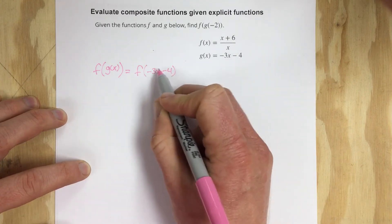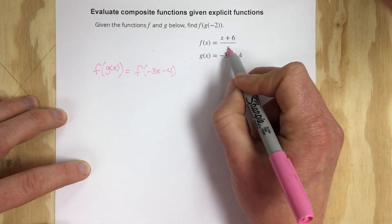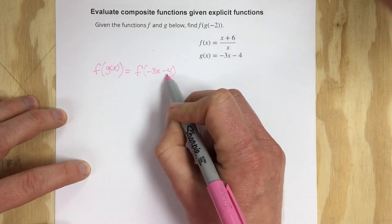That means I need to take negative 3x minus 4 and plug it into the f equation and replace the two x values with negative 3x minus 4.